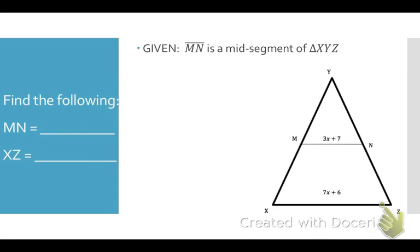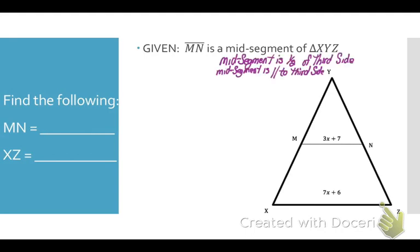Given that line segment MN is a mid-segment of triangle XYZ, find the length of MN and the length of XZ. Mid-segments are half the length of the third side and parallel to the third side. So the length of MN has to be half the length of XZ, or equivalently, the length of XZ has to be twice the length of MN.